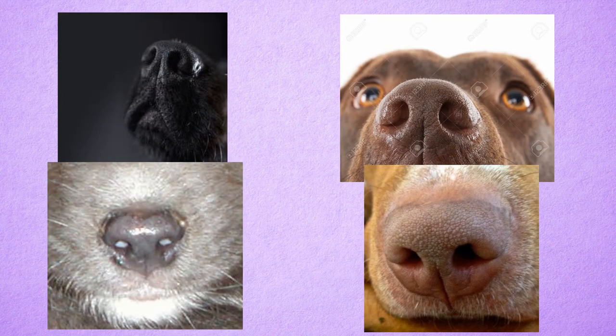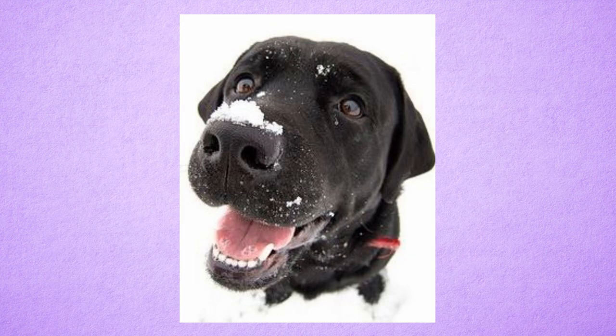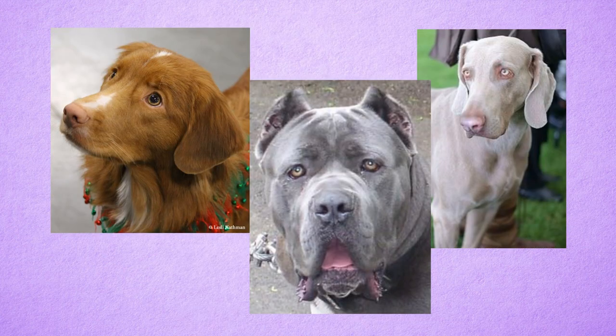Eumelanin also affects the dog's nose and eye colors. The nose will be black, liver, blue, or Isabella, depending on the fur color. The brown eyes that most dogs have are caused by black eumelanin. But when a dog has altered and restricted production of eumelanin, the irises will become lighter in an amber or golden color.